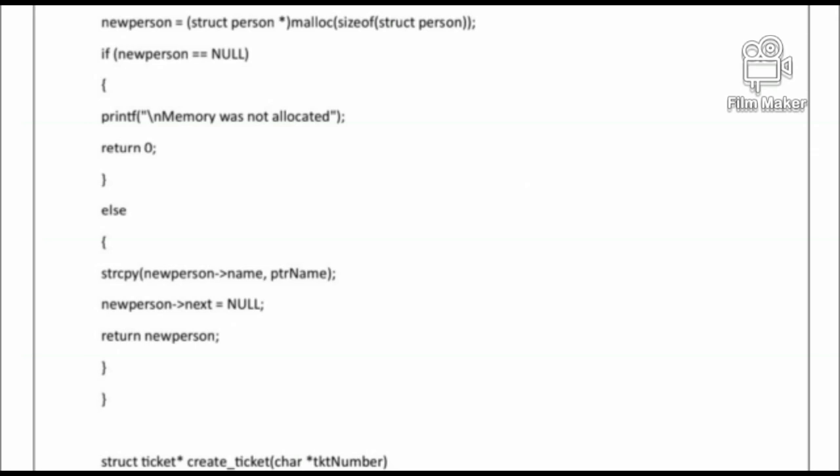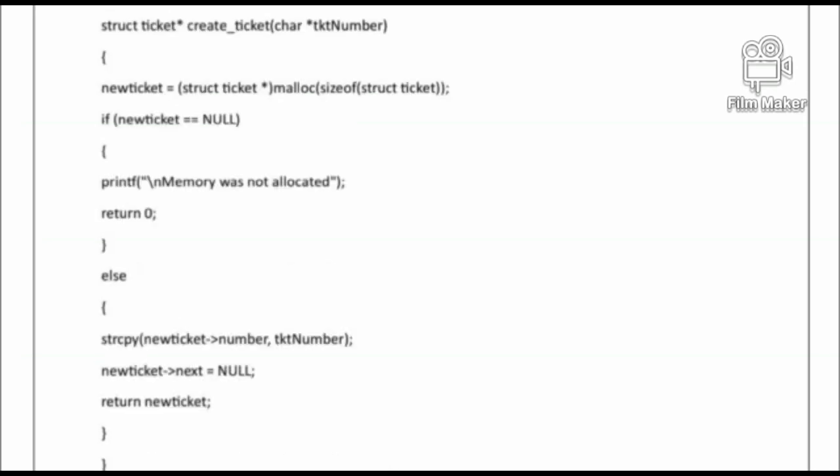We use the malloc function: 'newPerson = (struct Person*) malloc(sizeof(struct Person))'. Then we have an if-else block. In the else part, we use strcpy to copy the name — 'strcpy(newPerson->name, ...)' and set 'newPerson->next = NULL'.